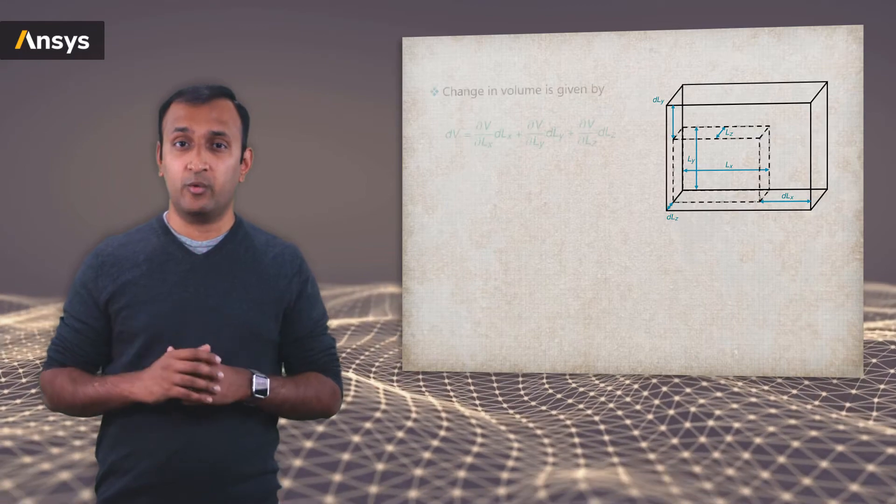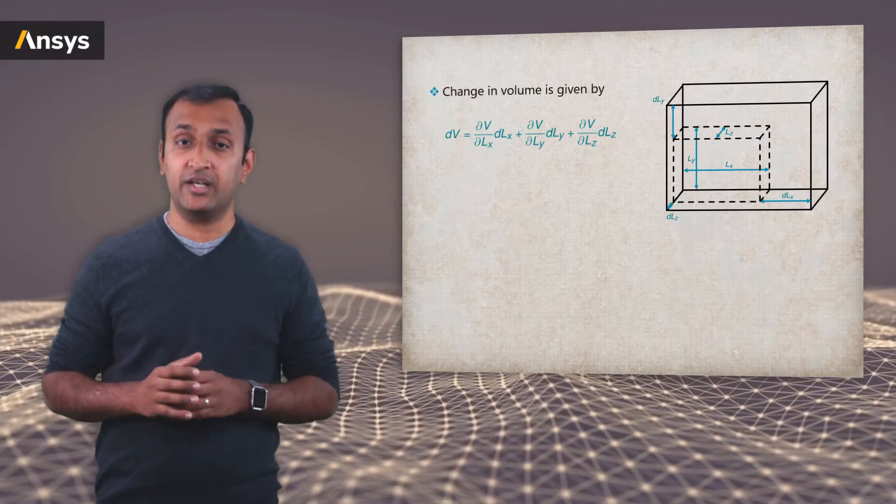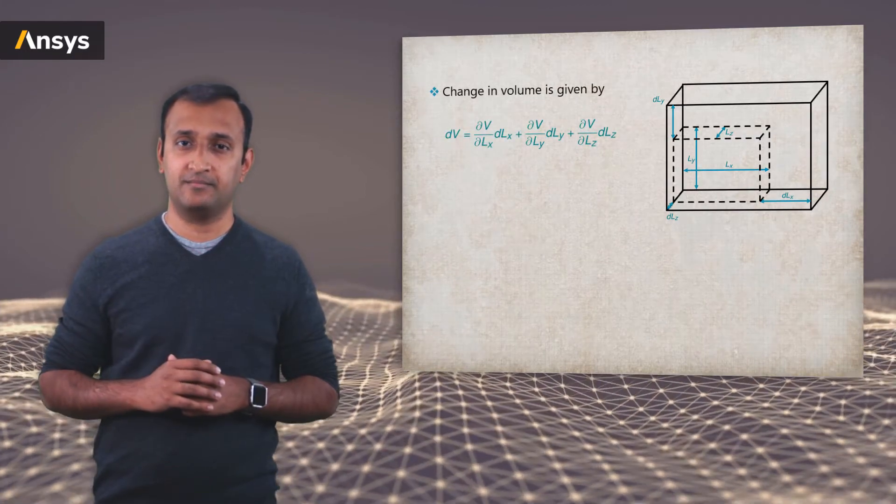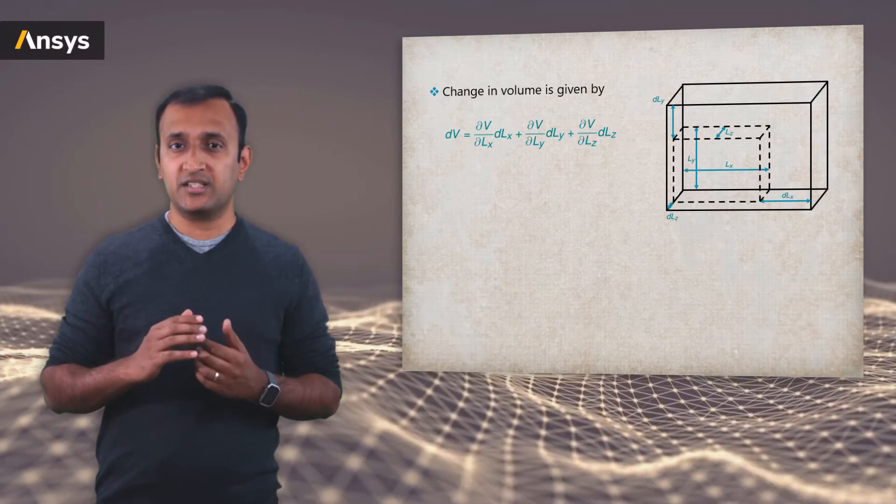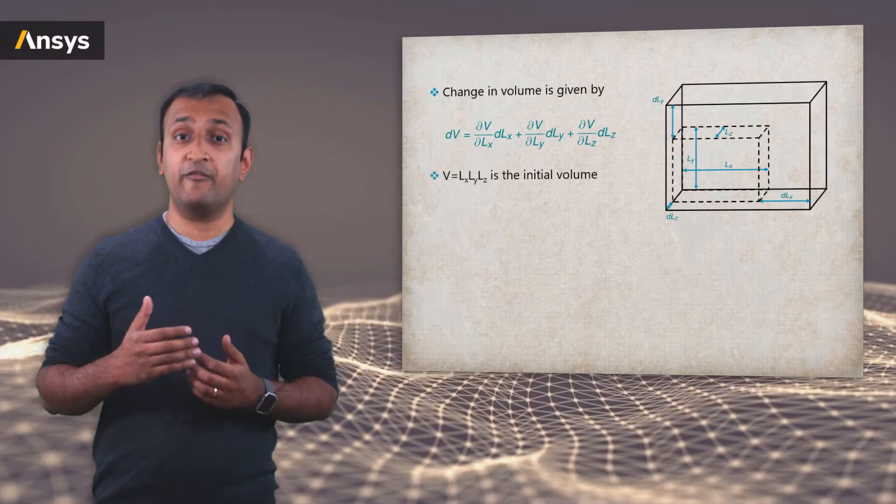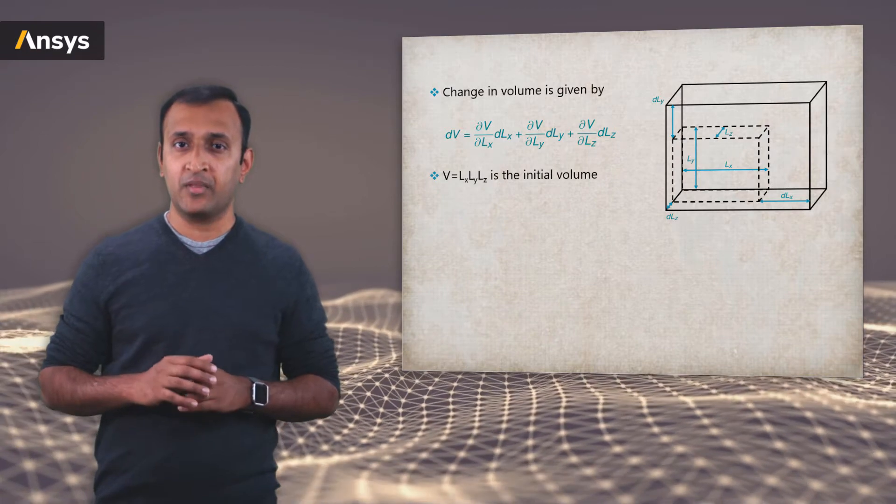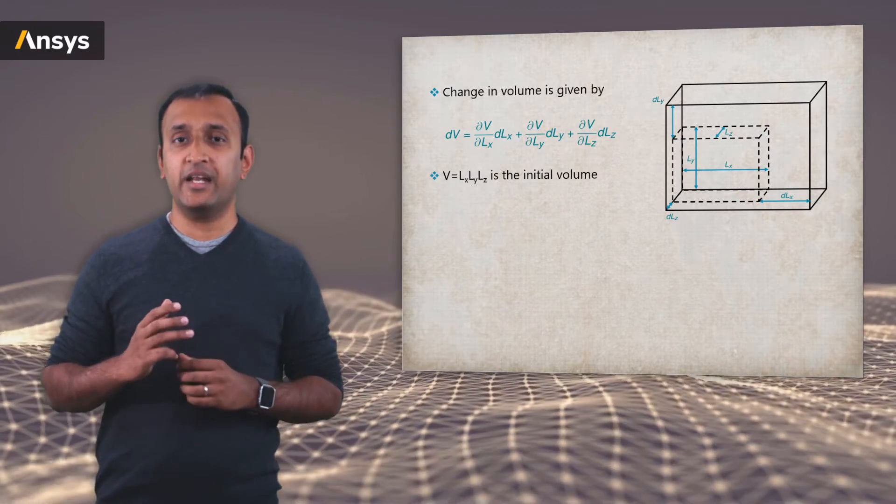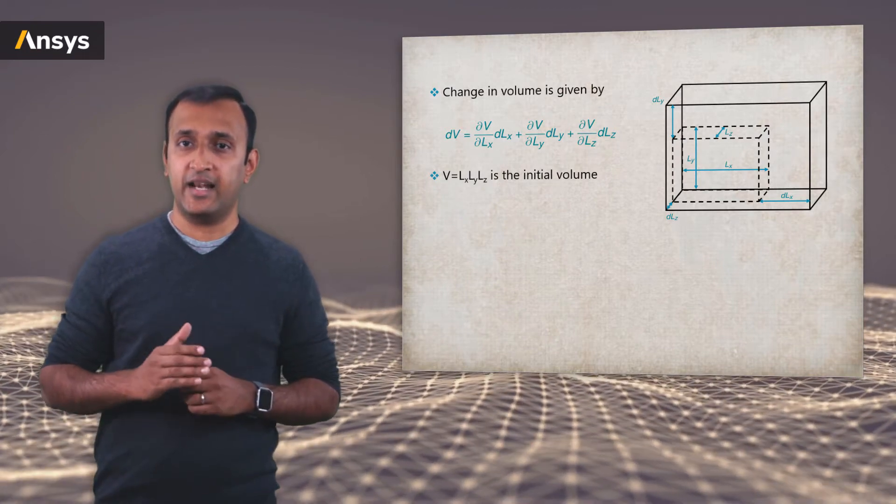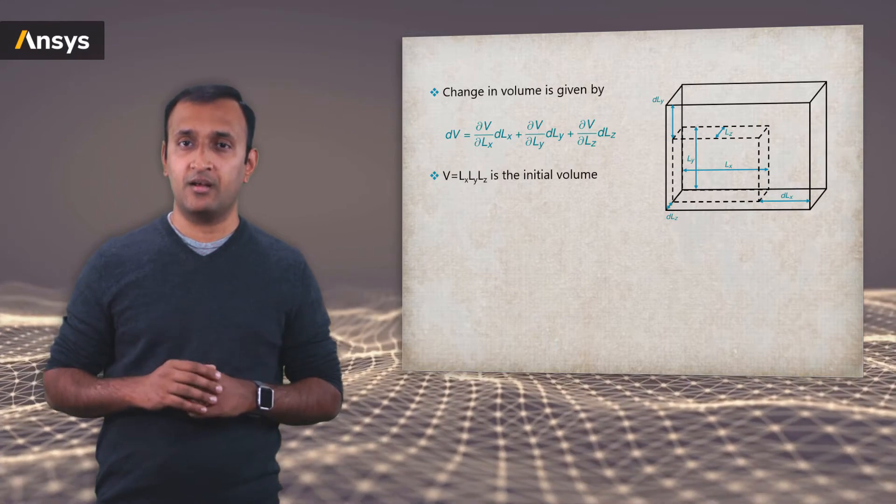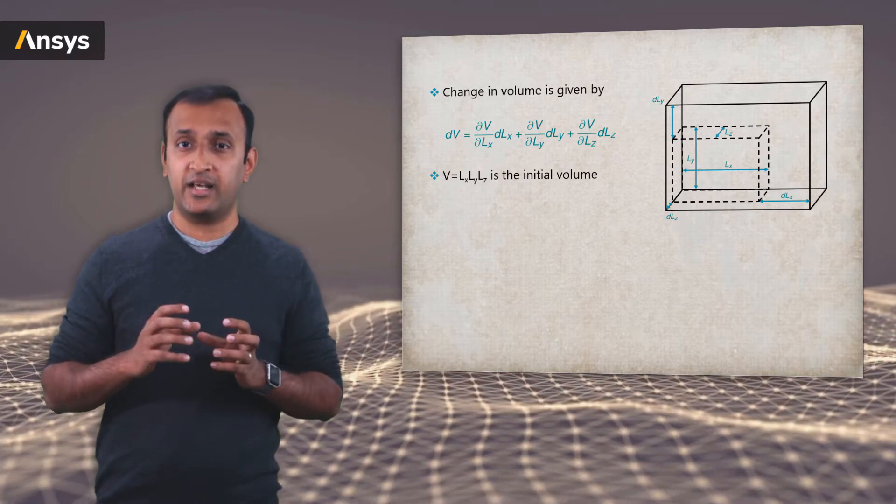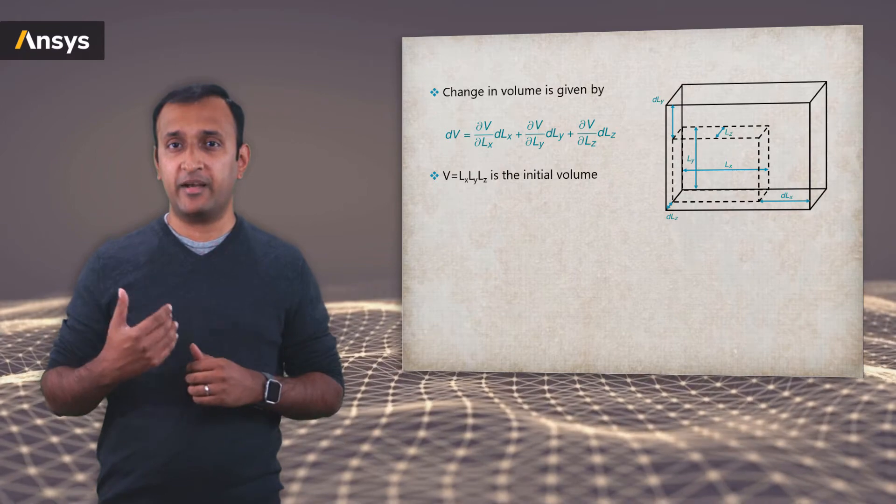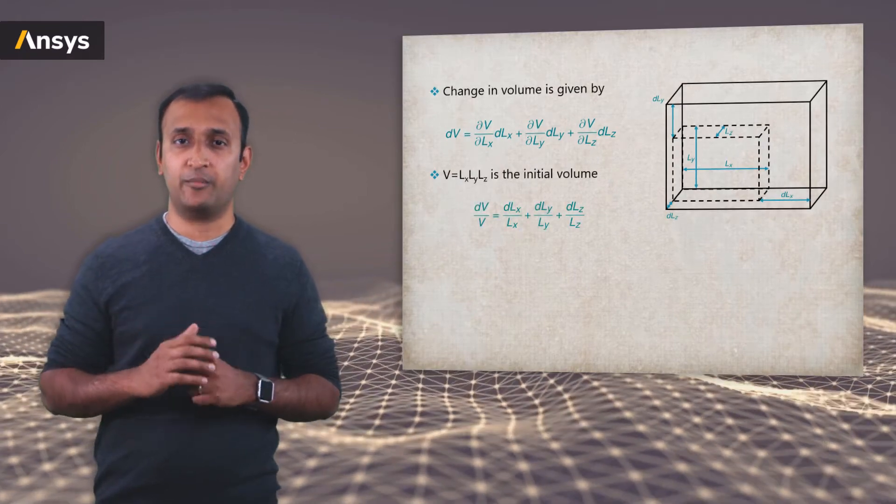The resultant change in volume can be calculated using this equation. In this equation, V is the volume of the block before undergoing any deformation, and it's a product of the three initial principal dimensions Lx, Ly, Lz. Let's plug this relation in the earlier equation and divide it by V on both sides and it reduces to this form.